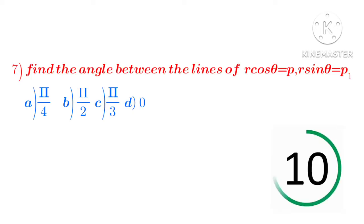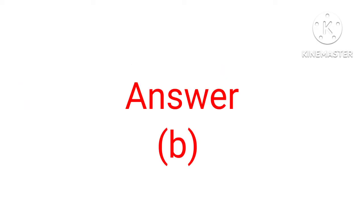Find the angle between the lines r cos theta equal to a, r sin theta equal to b. Option a: pi by 4, b: pi by 2, c: pi by 3, option d: 0. Answer is b.